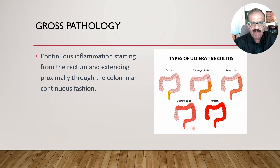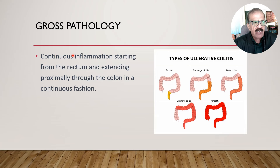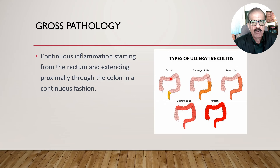Looking at gross pathology, a key feature is continuous inflammation — important because in Crohn's disease there may be skip lesions, but in ulcerative colitis, starting from the rectum, it is a continuous disease. It could affect just the rectum (proctitis or ulcerative proctitis), the rectum and sigmoid (proctosigmoiditis), or extend further as distal colitis, extensive colitis, or pancolitis.